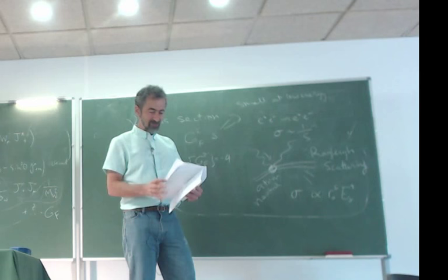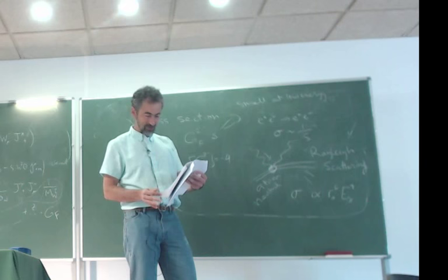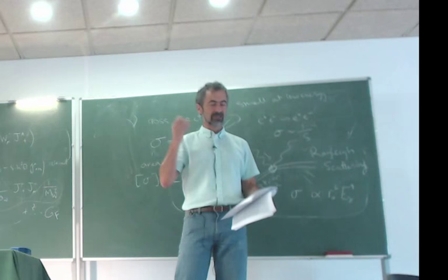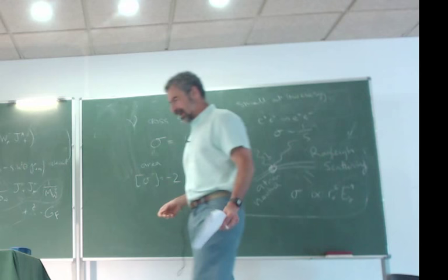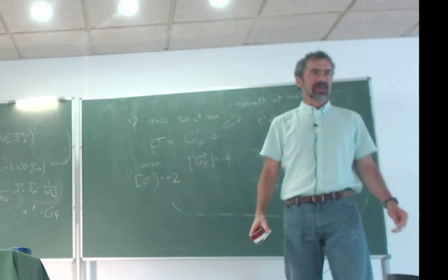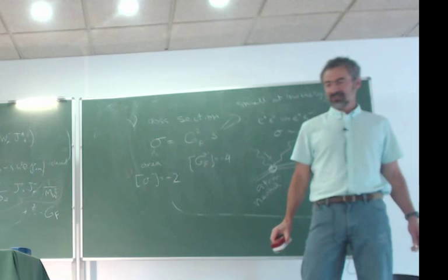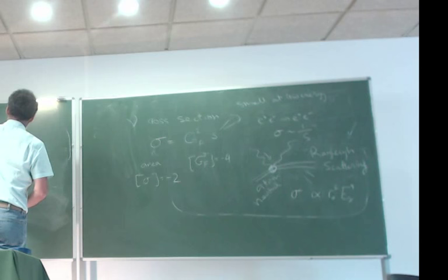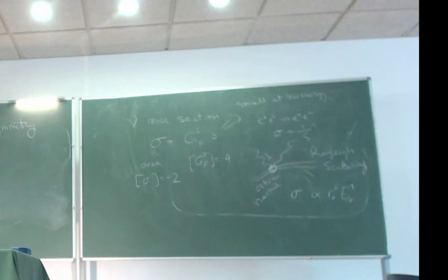The last topic for today is the bottom-up approach and going beyond the Standard Model, specifically the idea of accidental symmetry. An accidental symmetry is a symmetry that looks like a symmetry at low energy but isn't a symmetry of the full theory. A practical example: in lattice QCD, the fundamental theory has only hypercubic symmetry, not full Lorentz (SO(4)) symmetry — yet long-wavelength predictions are Lorentz invariant.